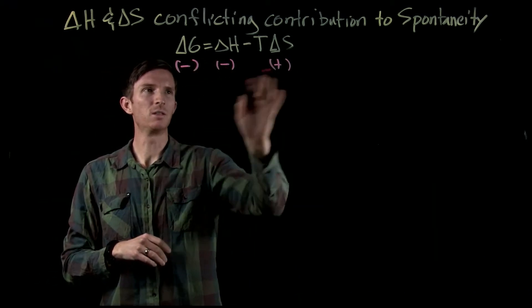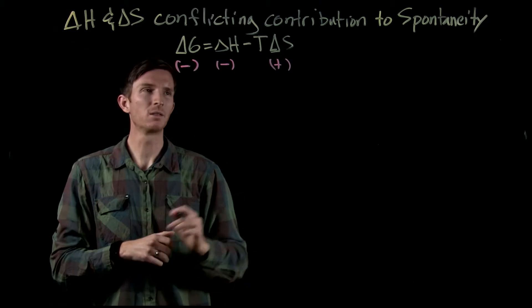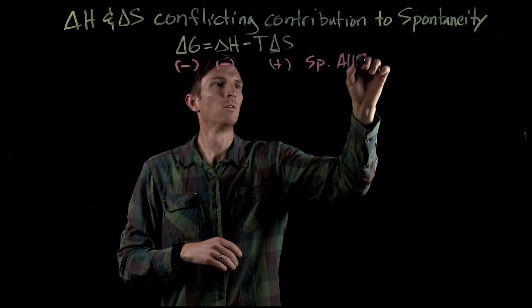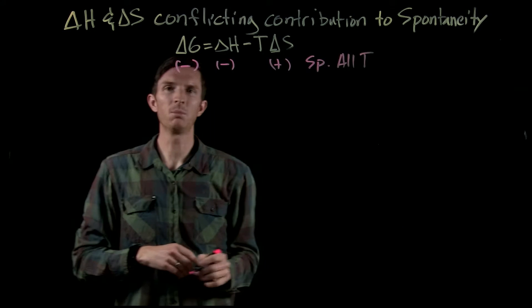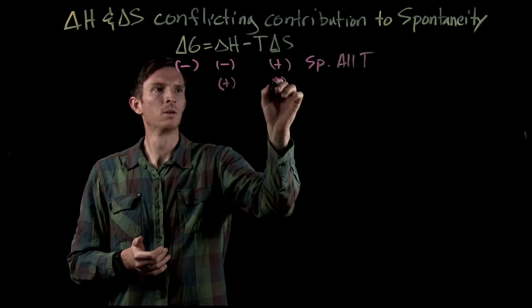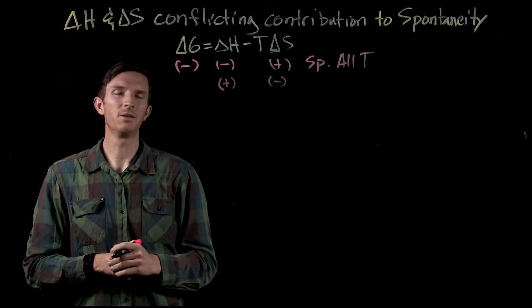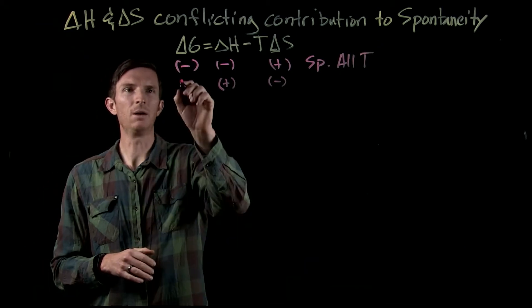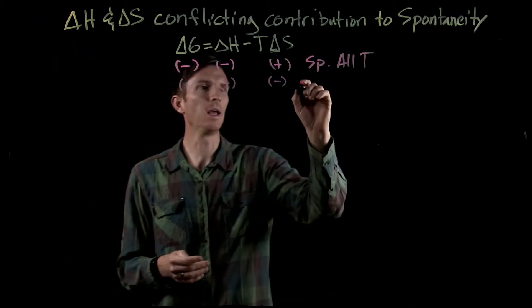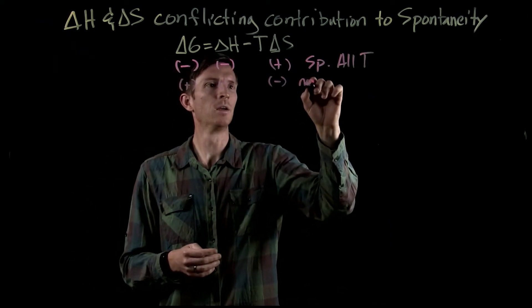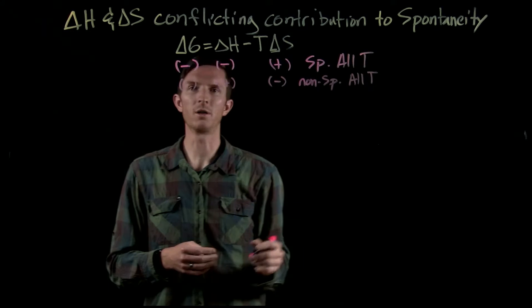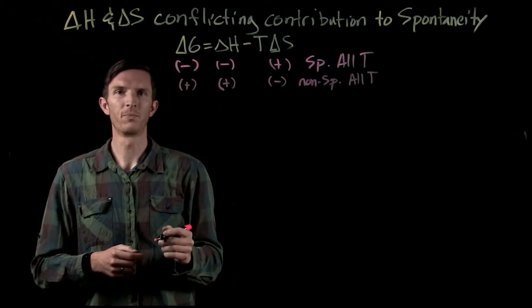If we have a negative delta H and a negative delta S, we'll notice that this can be spontaneous. But if we have the opposite — a positive delta H and a negative delta S — that will mean our delta G will always be positive. And we'll see this instance as non-spontaneous for all temperatures.